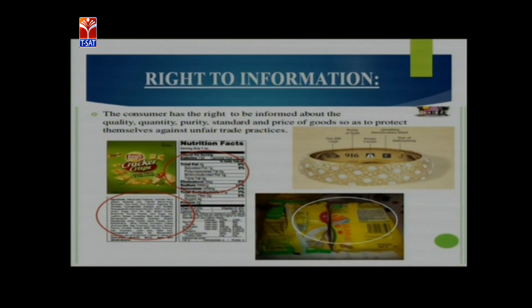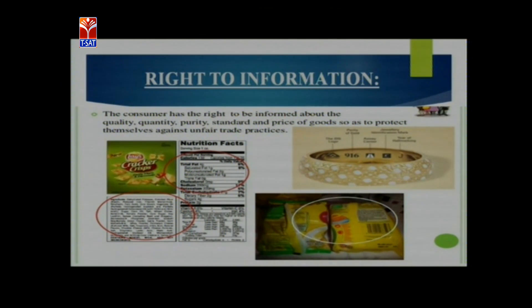The next is the right to information. The consumer has a right to be informed about the quality, quantity, standard, and purity of a product to protect himself against the unfair trade practices committed by traders and manufacturers. For example, if we go to a shop to buy a mobile phone, we have a right to know all about that phone before buying — its camera, RAM, ROM, and model. This Consumer Protection Act 1986 provided us the right to know information about all products before buying.